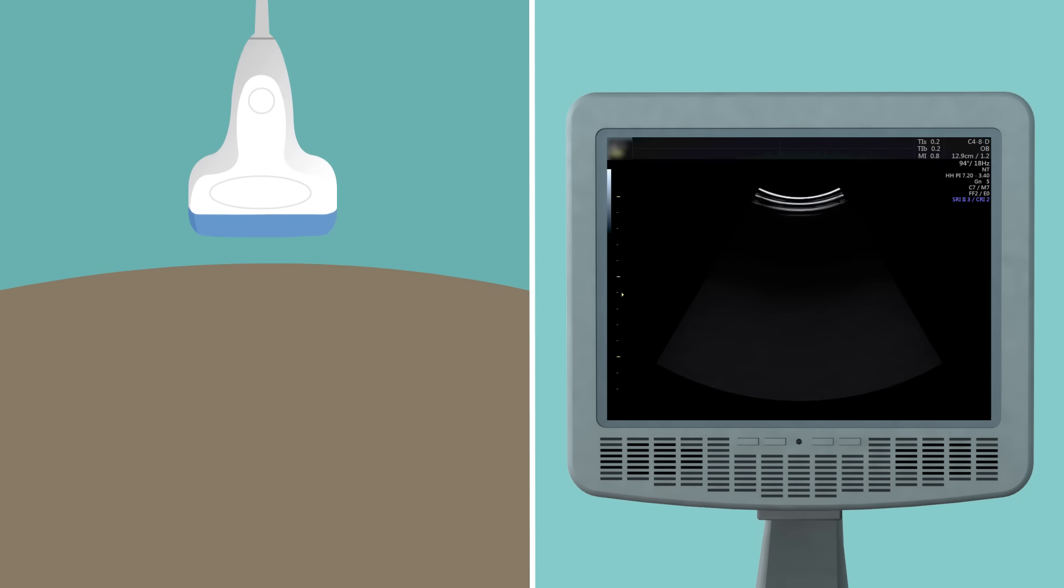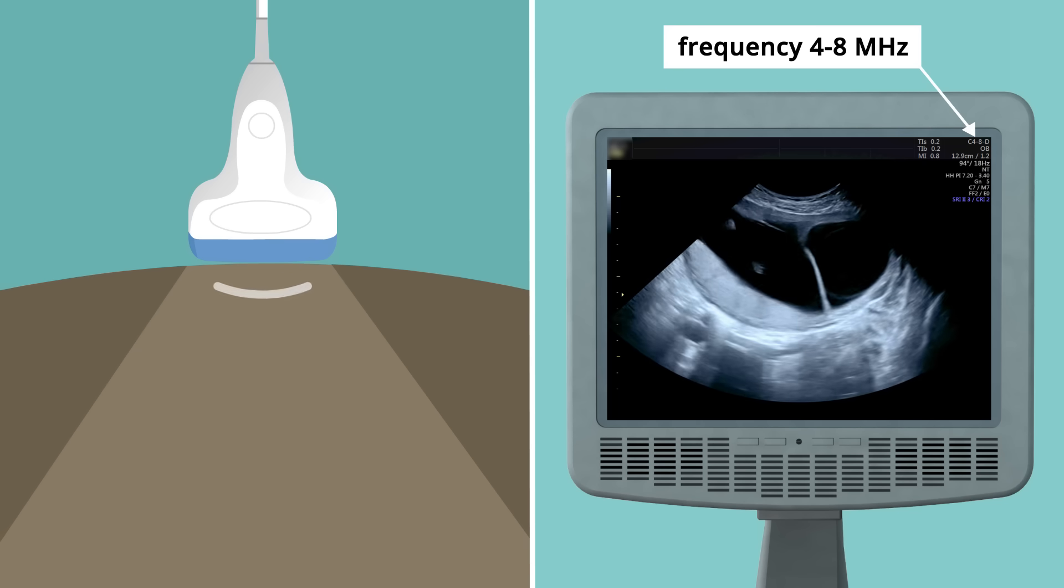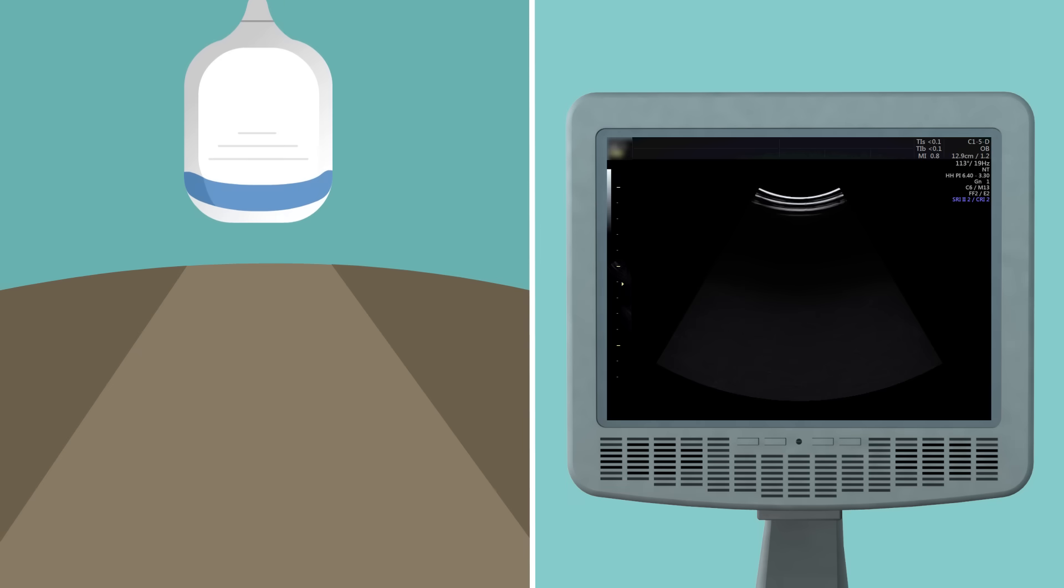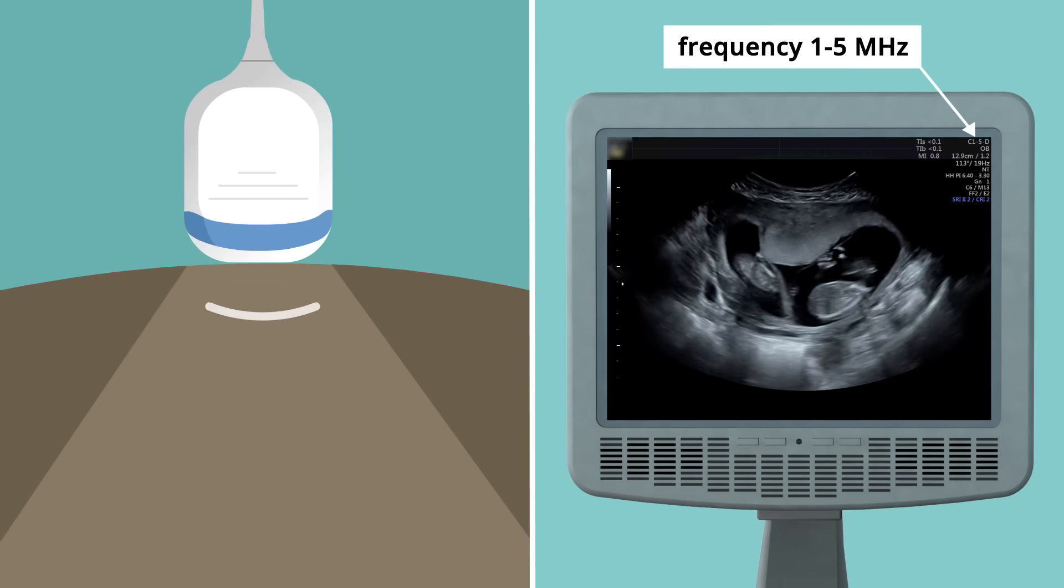Probes using higher-frequency ultrasound produce a very precise image but are limited by the depth they are able to penetrate, while lower-frequency probes allow for deeper penetration at the cost of a lower-resolution image.